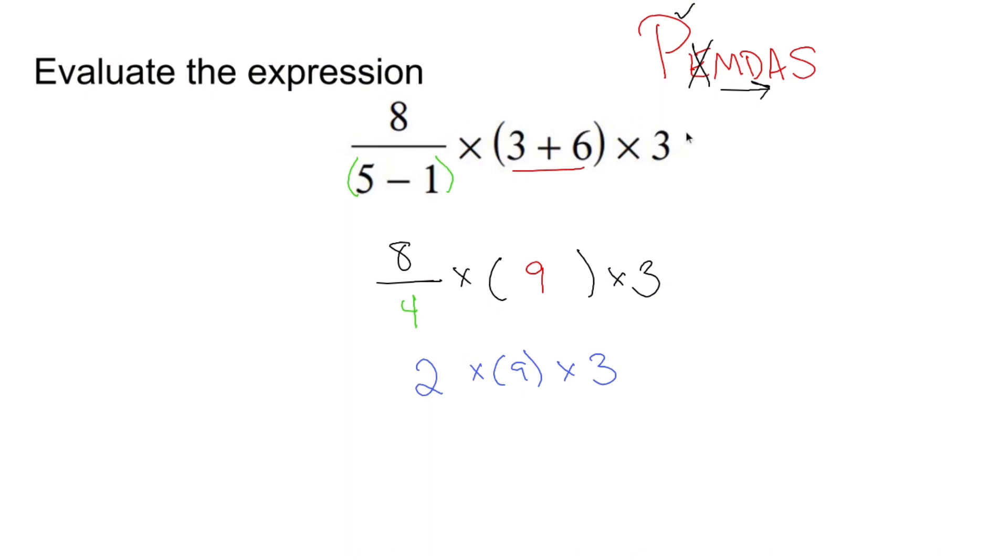Now we keep multiplying left to right. 2 times 9 is 18. Drop down times 3. Keep multiplying left to right. 18 times 3 is 54. And I'm done. No adding, no subtracting, nothing like that. That's PEMDAS for you.